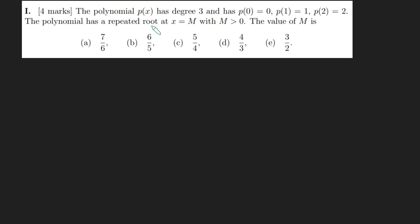We have a polynomial p of x which has degree 3 and p of 0 is 0, p of 1 is 1 and p of 2 is 2. We're also told that this polynomial has a repeated root at x equals M, where M is bigger than 0. We want to know what is the value of M.